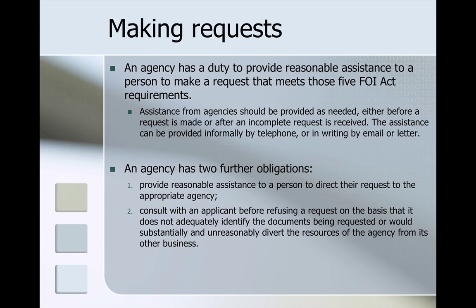An agency also has a duty to provide reasonable assistance to a person to make a request that meets those five requirements. Assistance should be provided as needed either before a request is made or after an incomplete request is received, and can be provided informally by telephone or in writing. An agency has two further obligations: to provide reasonable assistance to direct a request to the appropriate agency, and to consult with an applicant before refusing a request on the basis that it does not adequately identify the documents or would substantially and unreasonably divert the resources of the agency from its other business.